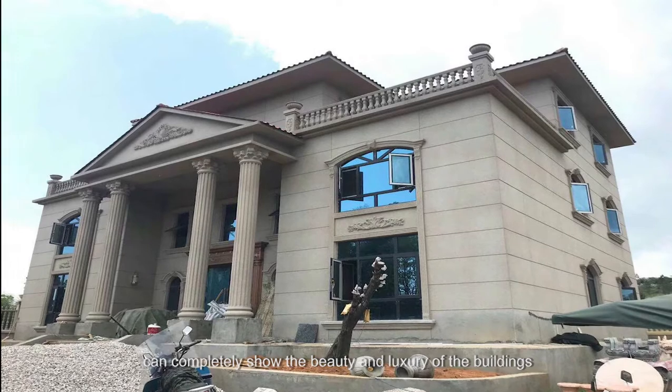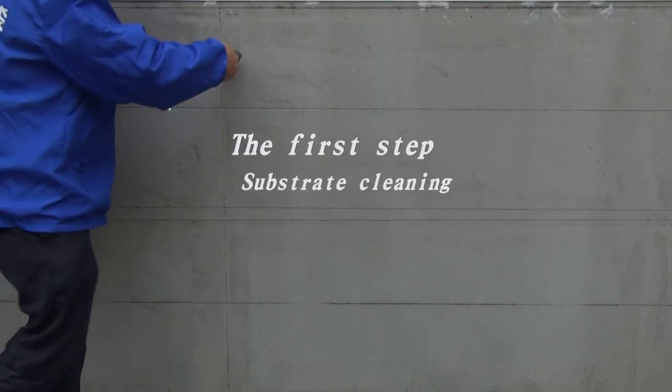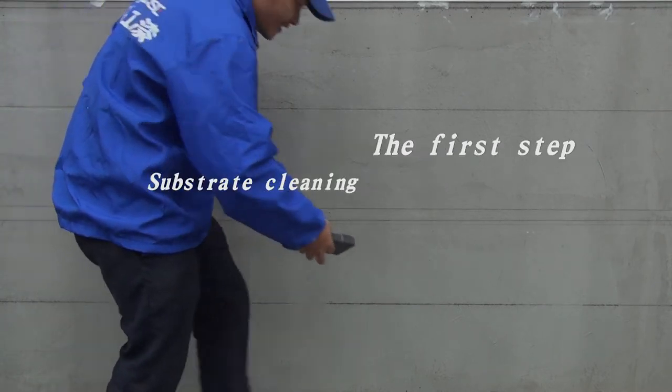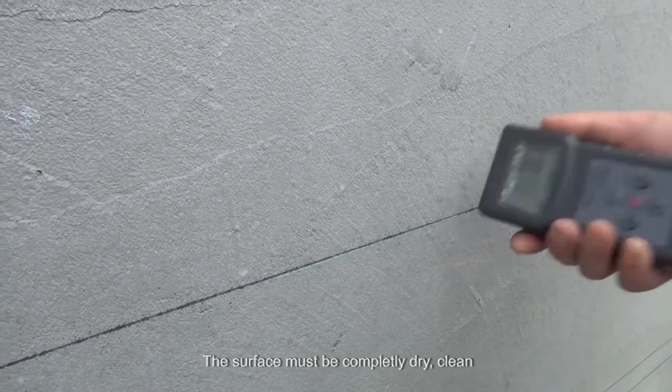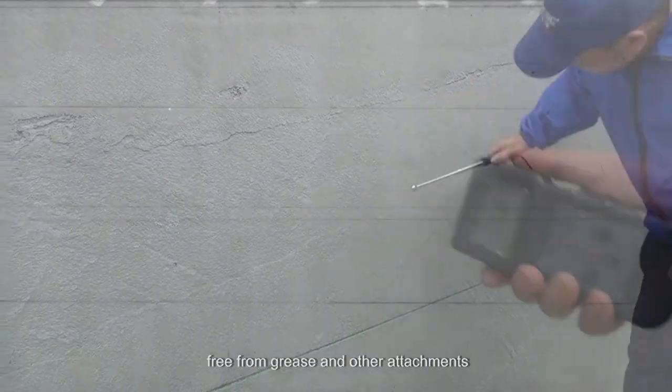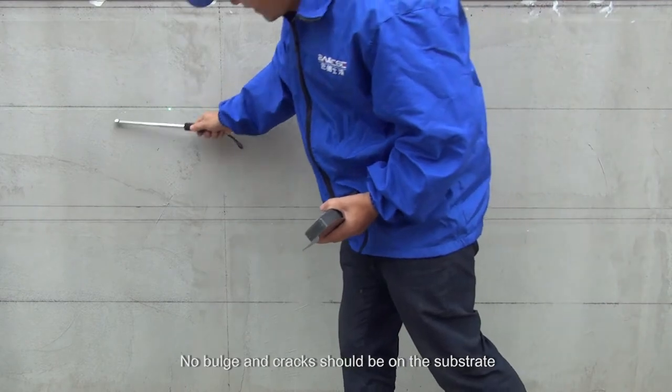The first step: substrate cleaning. Check the substrate. The surface must be completely dry, clean, free from grease and other attachments. No bulge and cracks should be on the substrate. Stop application at rainy, windy, and snowy temperature.